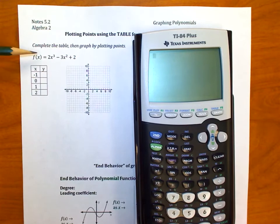Specifically, I'm working on this one here, 2x cubed minus 3x squared plus 2. And what I want to do is use the table feature of the TI-84 graphing calculator to help fill out this here.